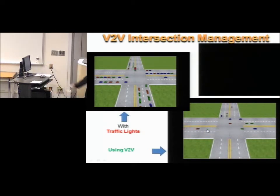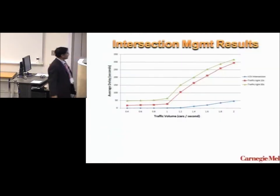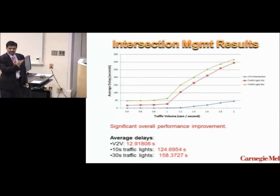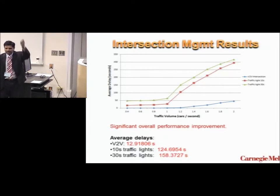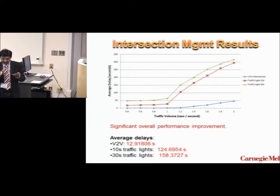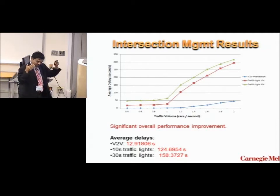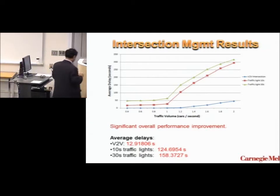Measuring this against traffic lights: with V2V, the average delay for a car through the intersection was about 13 seconds. With traffic lights, depending on timing, the delays are about an order of magnitude higher. You can get tremendous gains in throughput without investing more in infrastructure — 90% of intersections don't have traffic lights anyway. Putting only a $50 to $70 radio in the vehicle can accomplish big things. Throughput went up significantly and safety was never compromised. We did see a simulator crash once, but there was a bug in the program; we fixed the bug.